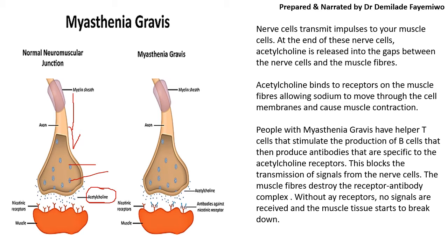When people have myasthenia gravis, it's a very different story. Their B cells produce antibodies that are specific to the acetylcholine receptors, which means that these antibodies will go and sit on top of the receptors. As a result, when acetylcholine is taking the message from the nerve cell, it is unable to bind to the receptor because the antibodies are now sitting on the receptors. Think of it this way: normally, acetylcholine would be able to bind to the receptor on the muscle cell, but instead, there is an antibody sitting on that receptor. So the signal or impulse would not be transmitted to the muscle cells.